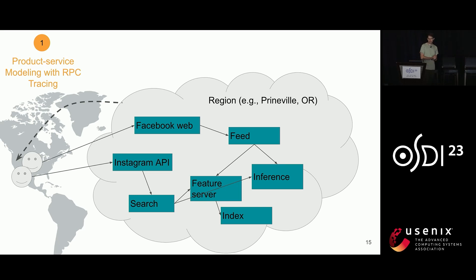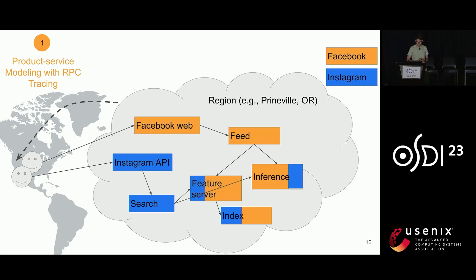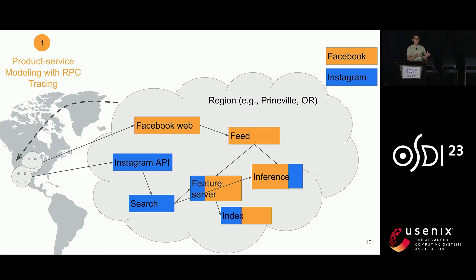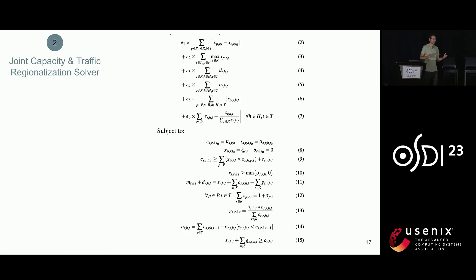For service modeling we use RPC tracing. The basic job is to attribute the capacity footprint of services to different top-level products — one color representing Facebook, another representing Instagram. We use RPC tracing joined with cost models for our capacity footprints to attribute what proportion of a service's footprint is dedicated to serving one top-level product versus another. In reality we have tens of these products. This wouldn't be a talk involving optimization without some math — check out the paper if you're into that.